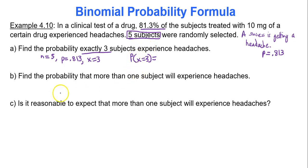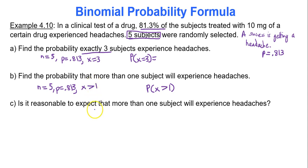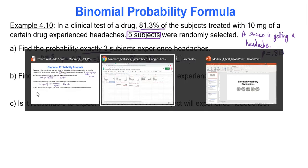Next, find the probability that more than one subject will experience headaches — so P(X > 1). N equals five, P equals 0.813, and we're looking for X greater than one. When inputting to Google Sheets, the lower bound will be two (since 'more than one' does not include one) and the upper bound will be five, because there are only five trials and you can't have more than five people with a headache.